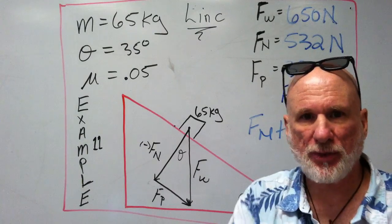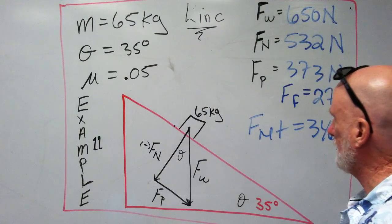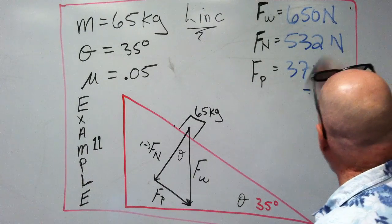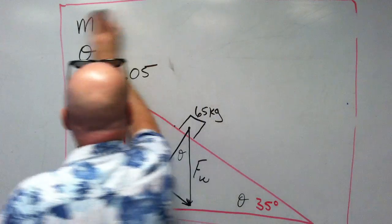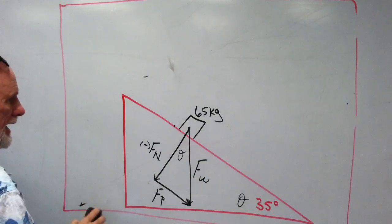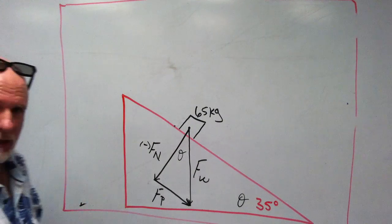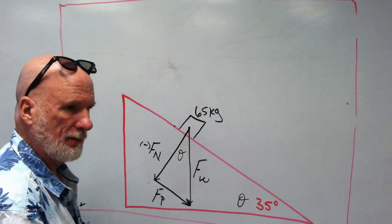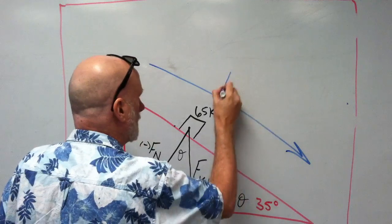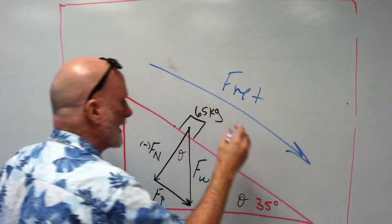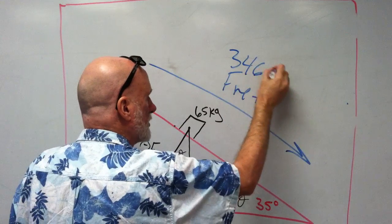Let's review what we've done. I'm going to erase this. I'll erase this. I'll erase this. And the net, this force, F net, is 346 newtons. Right? Now,